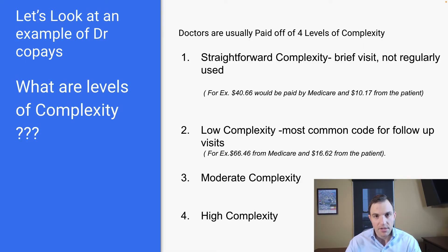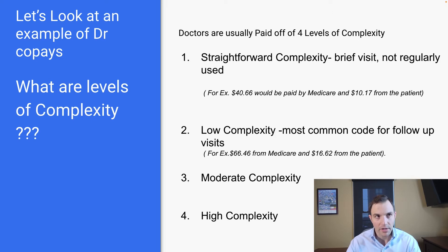This is how a family physician would bill Medicare. There are different levels of complexity: straightforward, low, moderate, and high. The most common level of complexity that's billed is low complexity.